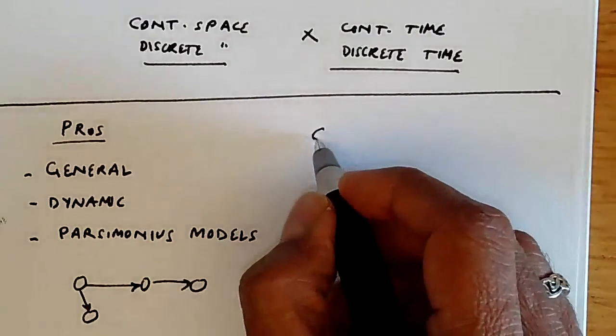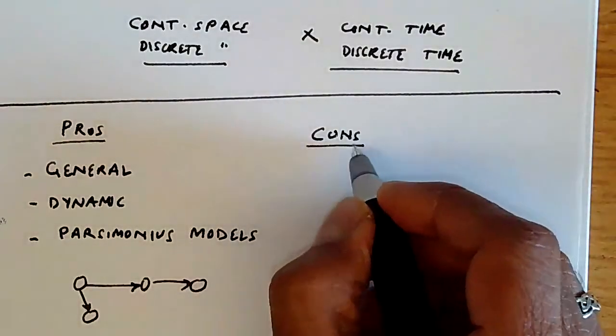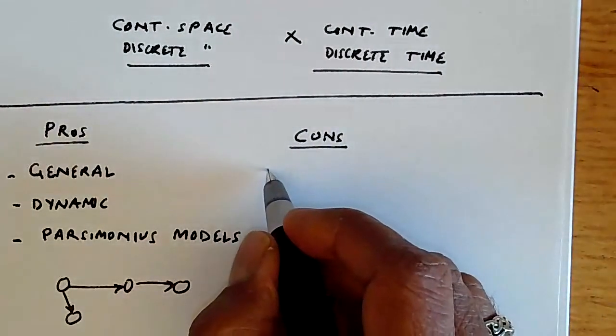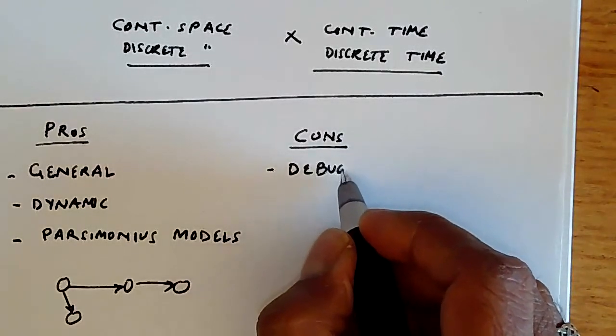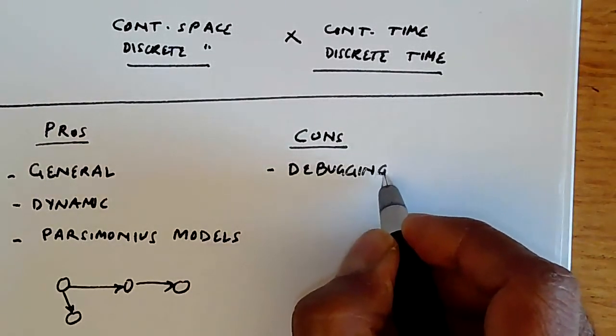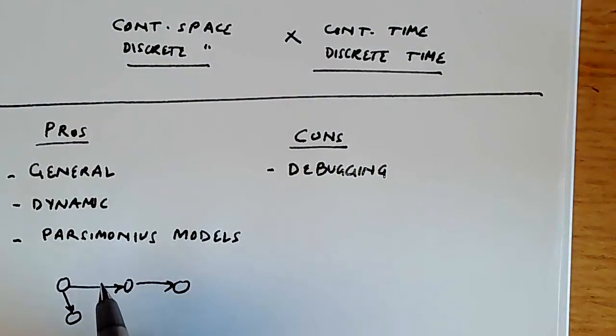On the other hand, there are some cons. One of them is that debugging a simulator is actually quite difficult. How do you know what you're doing actually is correct? And validating that the output of a simulation is correct is often quite challenging, and it's a task that not too many people who do simulations spend too much time thinking about. They simply do the simulation and hope everything is okay.